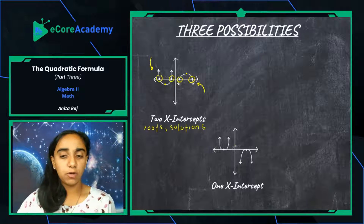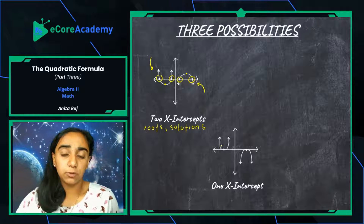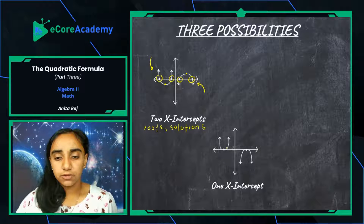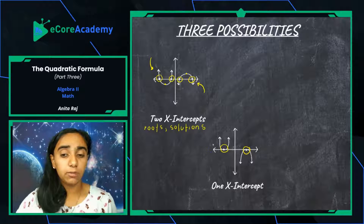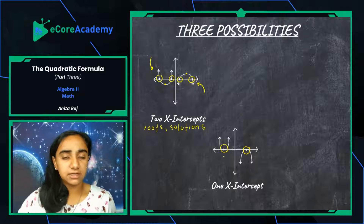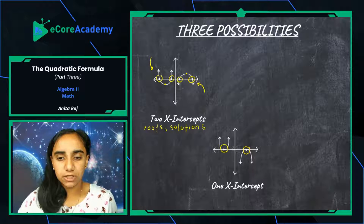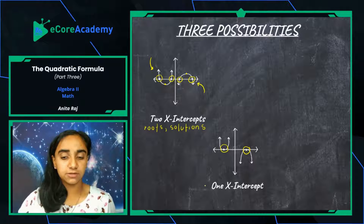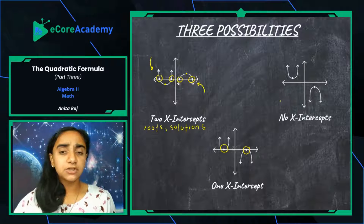The next possibility is one x-intercept. The graph to the left depicts a positive a value, the one to the right has a negative a value. As you can see, there's only one point where these graphs touch the x-axis. With a little deeper thinking you could tell it's the vertex — when you have one x-intercept, the vertex is your solution and lies on the x-axis.